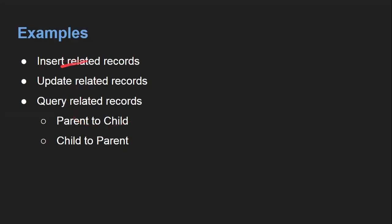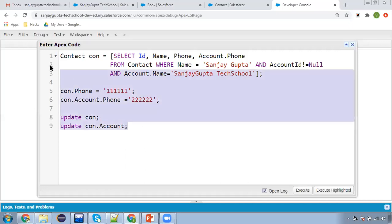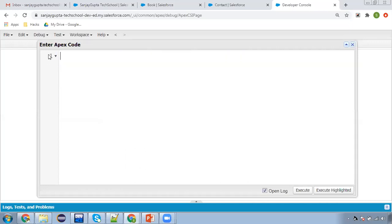I hope you understood how we can insert related records and how we can update related records. Now next is querying related records. First I'm going to tell you how we can query parent to child. We will be applying this on standard as well as custom objects.